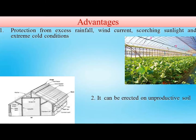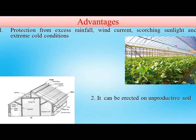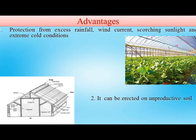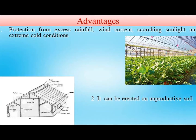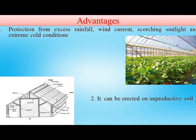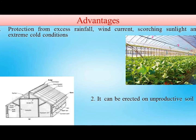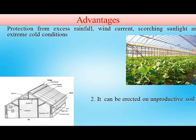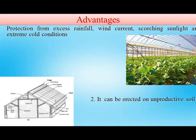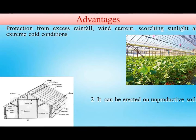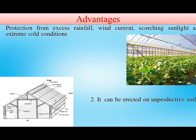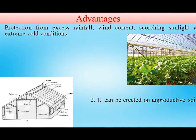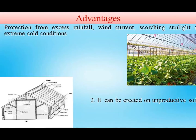First, greenhouse helps to protect the crops from any adverse climatic conditions, such as excess rainfall in monsoon season, high wind currents, high heat in summer, and extreme cold conditions in winter season. Poly House helps to give the right environmental facilities to the plants in any season, so that plants grow faster and it helps to increase the production and quality of crops like vegetables, fruits, and flowers.